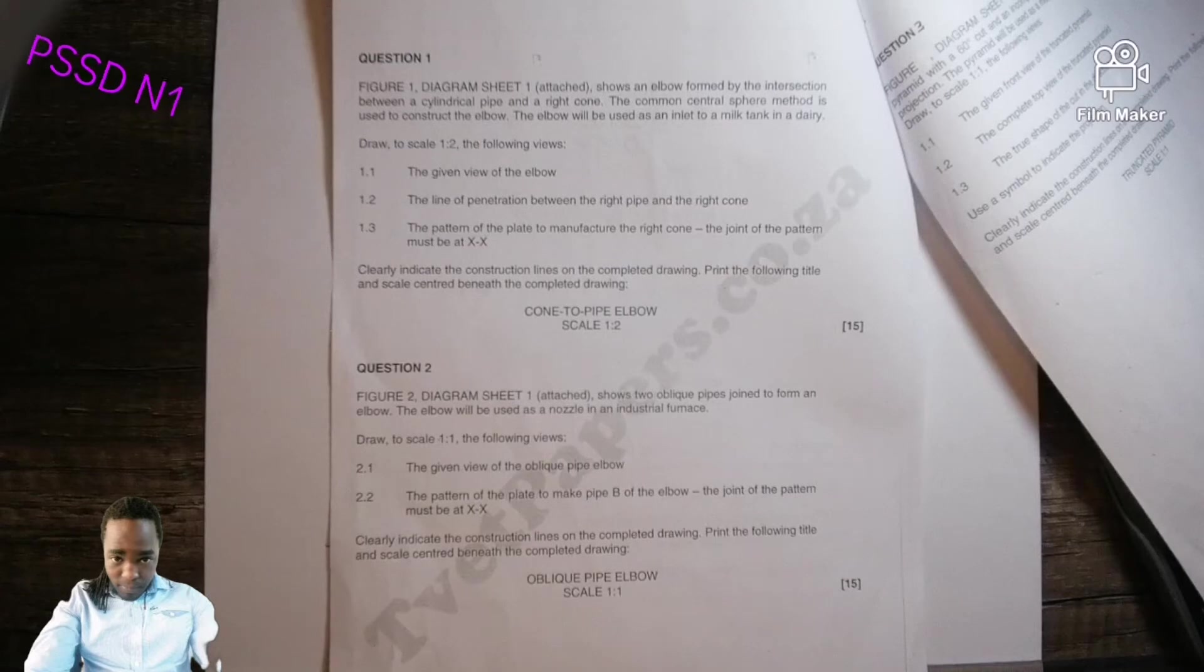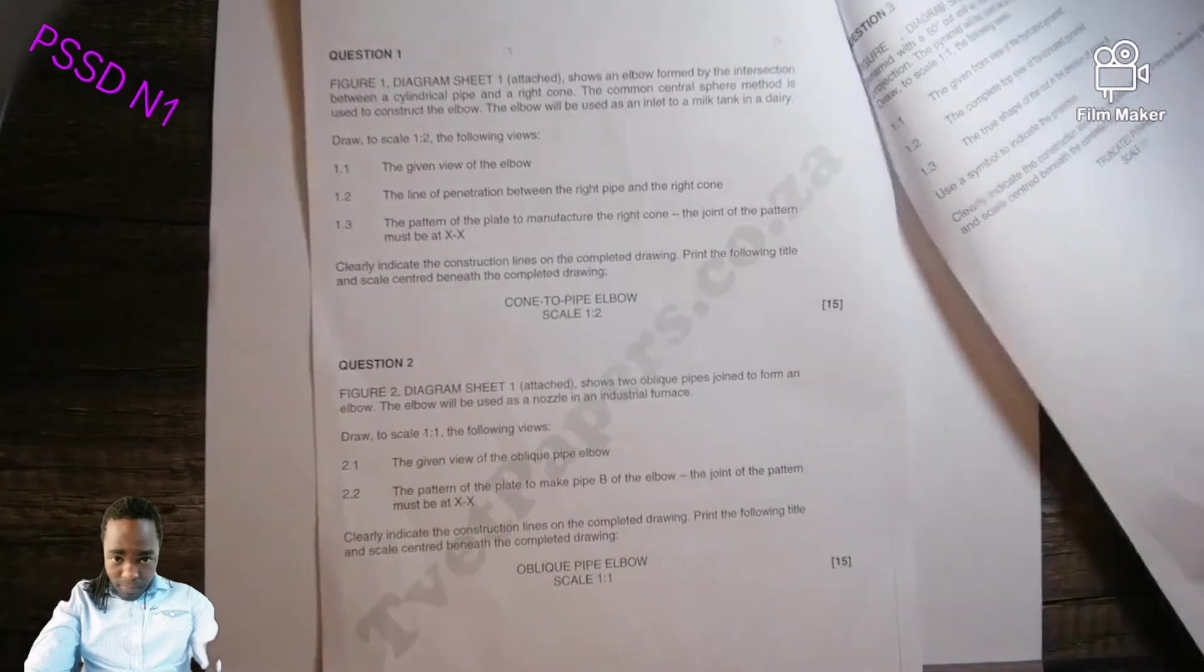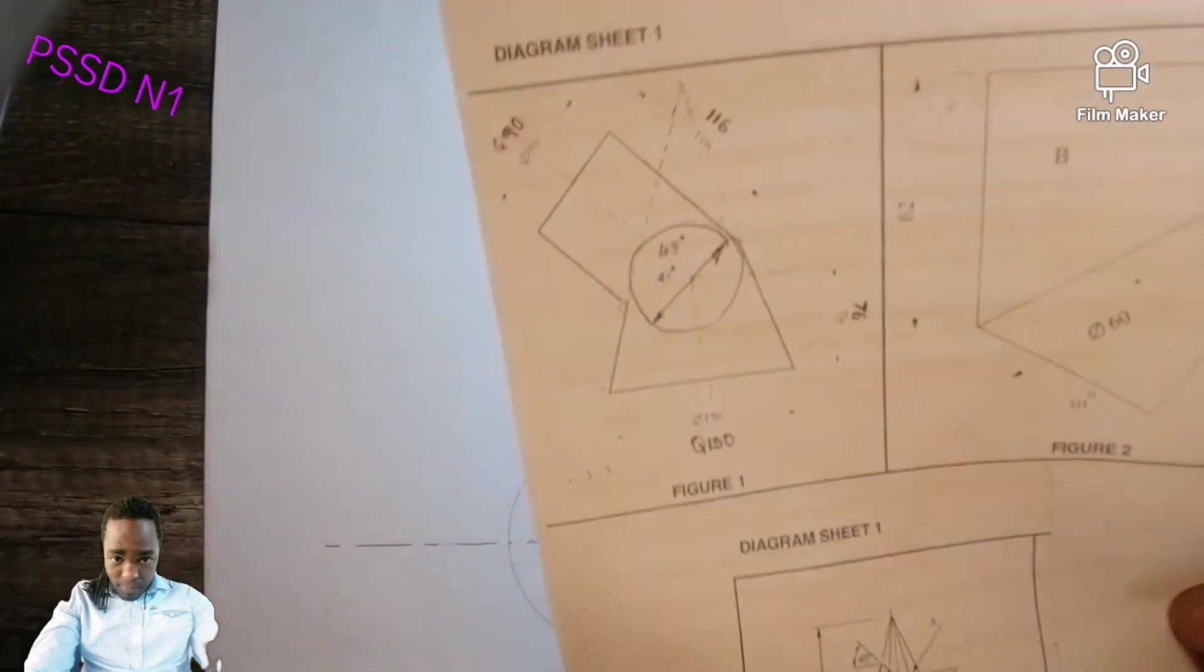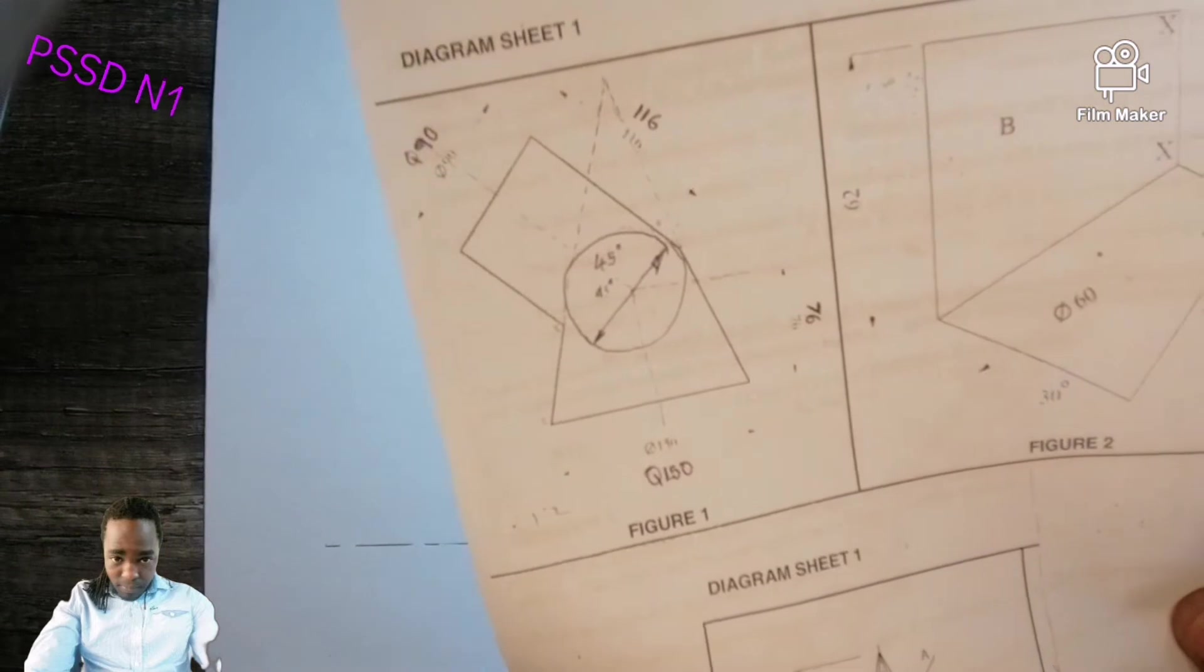1.3, the button of the plate to manufacture the right cone. The joint of the pattern must be marked at XX. So XX is the joint, which is this one.